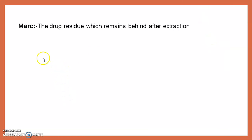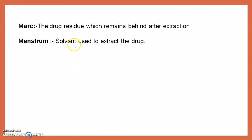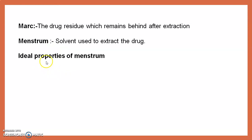Then we see the marc. What is meant by marc? The drug residue which remains behind after extraction is known as the marc — that means the filtrate collected on a filter paper or cloth. Then menstruum: the solvent used to extract the drug. When we dip our drug into the solvent, that solvent is known as the menstruum.